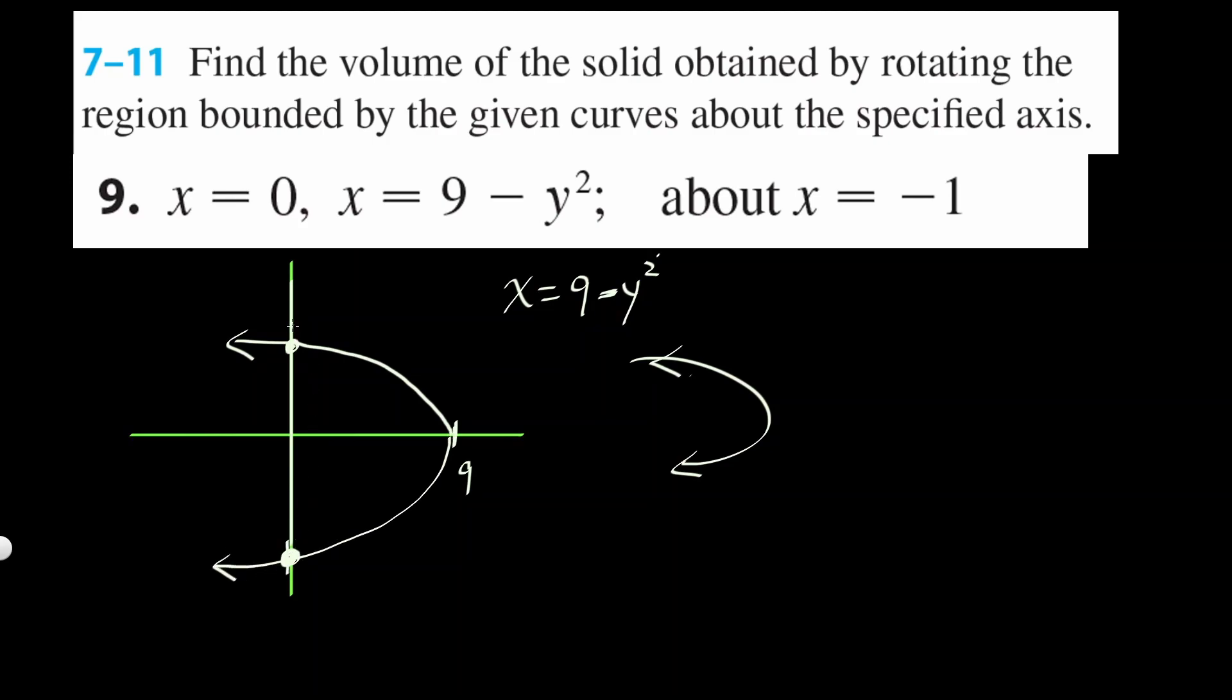And those intersections are y-intercepts, which means x should equal 0. So let's find where they intersect. When x equals 0, it's going to be 9 minus y squared. Bring it over. y squared is equal to 9. y is going to be plus or minus 3. So this bottom one is negative 3. Top one, it's just going to be 3 here. So the area enclosed by this is this one right here.